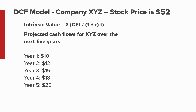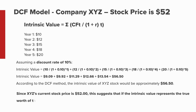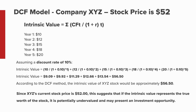Year 1: $10, Year 2: $12, Year 3: $15, Year 4: $18, and Year 5: $20. Assuming a discount rate of 10%, according to the DCF method, the estimated intrinsic value of XYZ stock would be approximately $56.50. Since XYZ's current stock price is $52, this suggests that if the intrinsic value represents the true worth of the stock, then it is potentially undervalued and may present an investment opportunity.